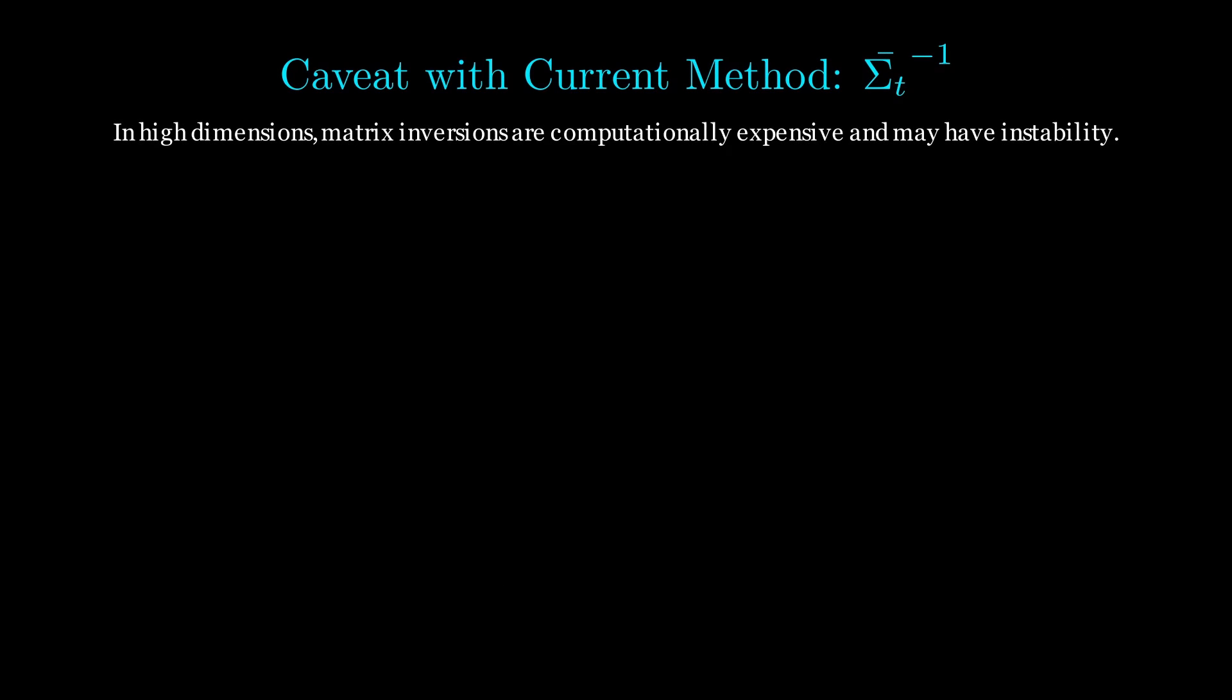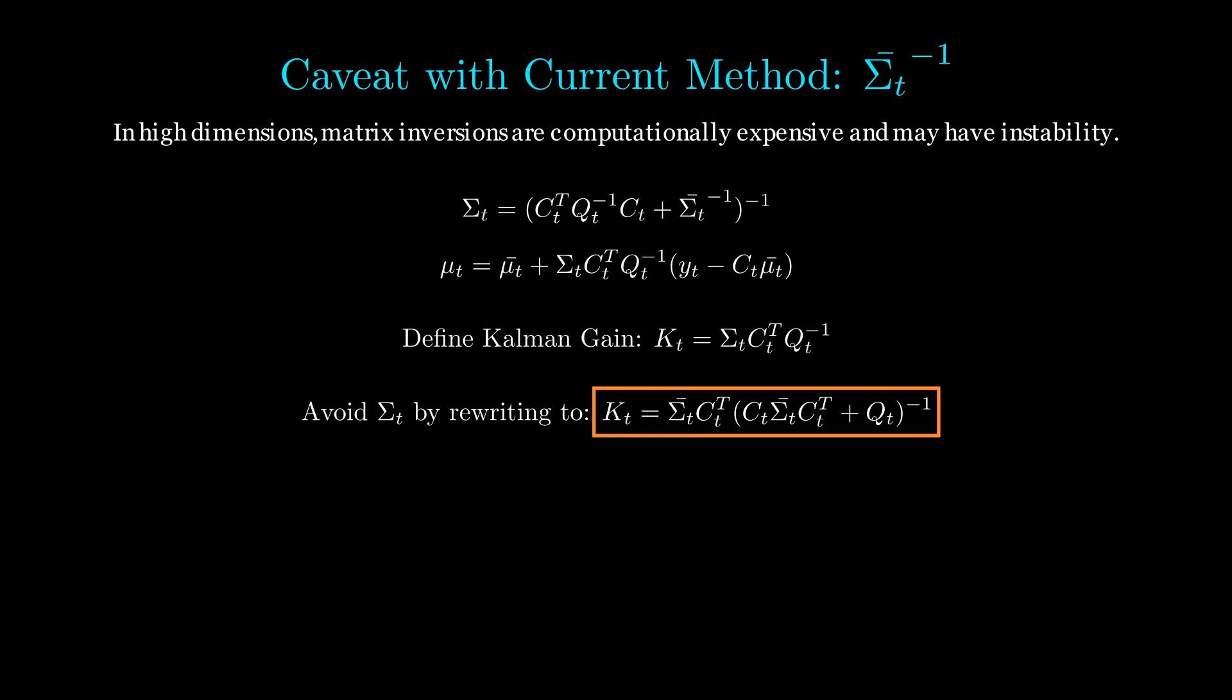One caveat is that in high-dimensional state spaces, computing the sigma bar inverse may be extremely intensive and may result in numerical instability. Thus, we define the Kalman gain to be sigma bar times C transpose times Q inverse. Writing it this way, there are some beautiful manipulations and cancellations that will allow us to write the Kalman gain as this form in the orange box. Finally, we have our covariance and mean after the correction step without computing the state covariance inverse.